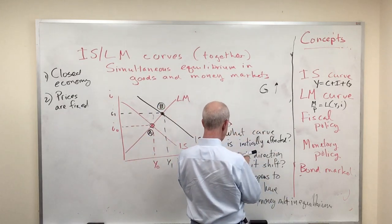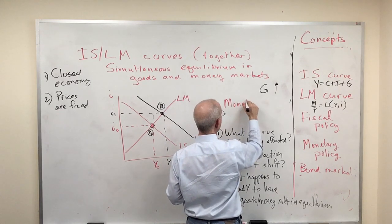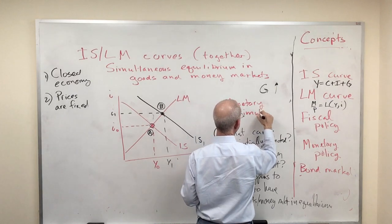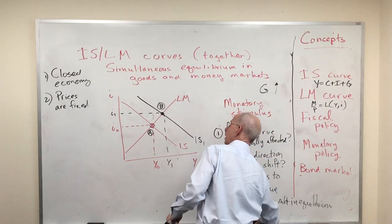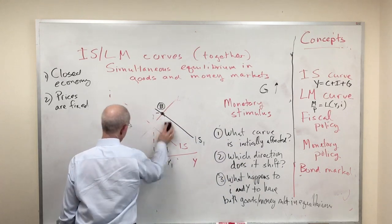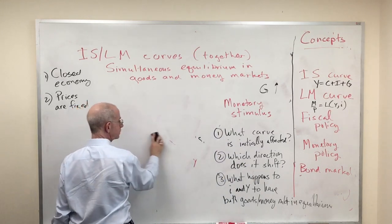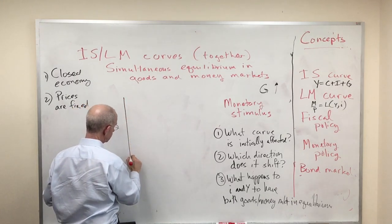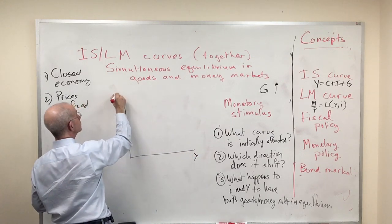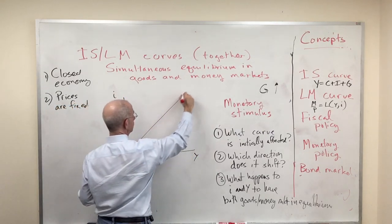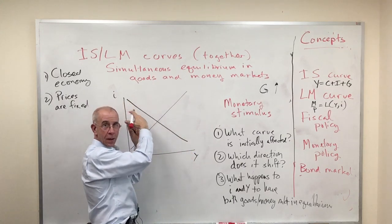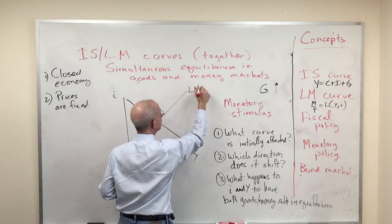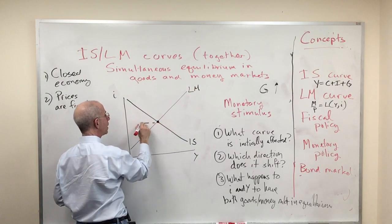Let's look instead at a monetary stimulus. And let me just redo this. IS curve, downward sloping like an ice slope, LM curve, heading up.